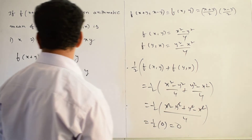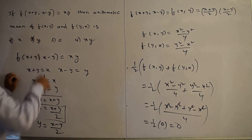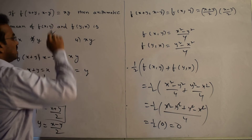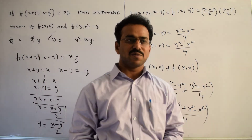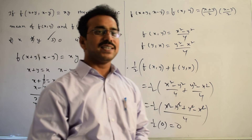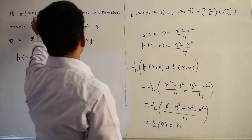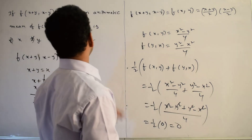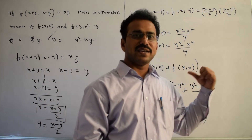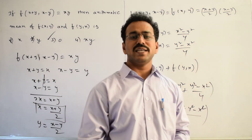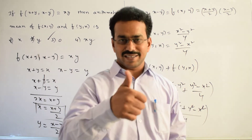Comparing with the given options, the first and second options are incorrect. The third option, 0, is the correct answer. In summary, we calculated f(x,y) from the given function f(x+y, x-y), then calculated f(y,x), and finally computed the arithmetic mean, which is 0. Thanks for watching.